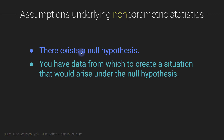Sometimes it's difficult to think about what exactly the null hypothesis is and how to translate it into a concrete situation that we can construct to get an empirical null hypothesis distribution. Another consideration is that you have sufficient data from which to create a situation that would arise under the null hypothesis. For example, if you only collect data from three trials, you won't be able to do permutation testing with just three trials.